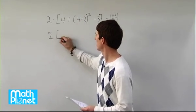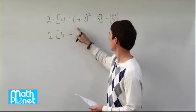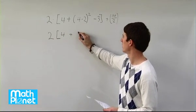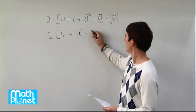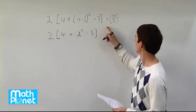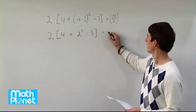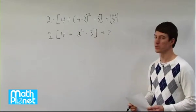We leave the 2 out front, still 4 plus something. Now we have 4 minus 2 which is just 2. This simplifies to 2 squared minus 3 close bracket. Plus, 14 divided by 2 is simply 7.